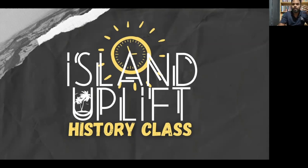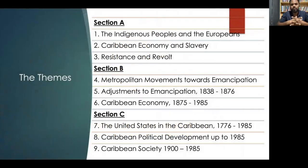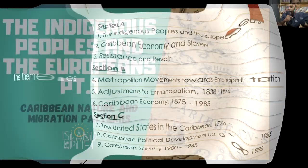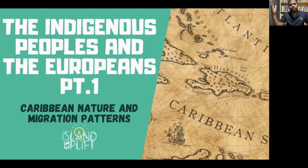There are nine main themes that we will be covering in this walkthrough of the CSEC Caribbean History Syllabus. Today, under Indigenous Peoples and the Europeans Part 1, we're going to be looking at Caribbean nature and migration patterns. I hope that you're ready — so let's begin.